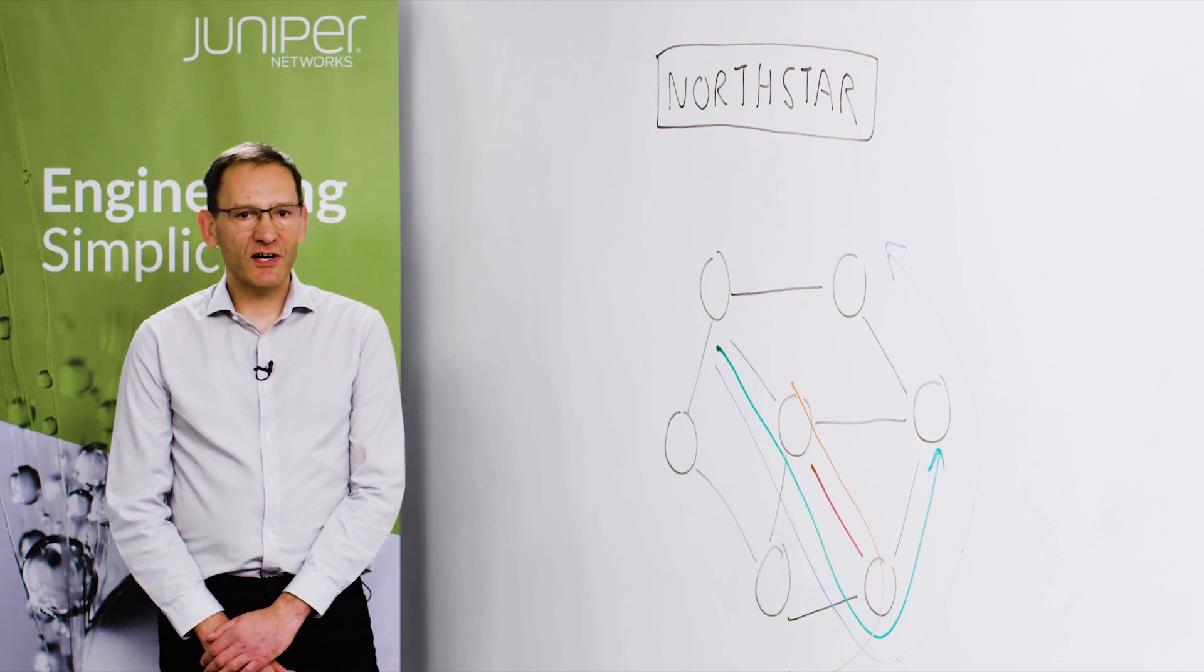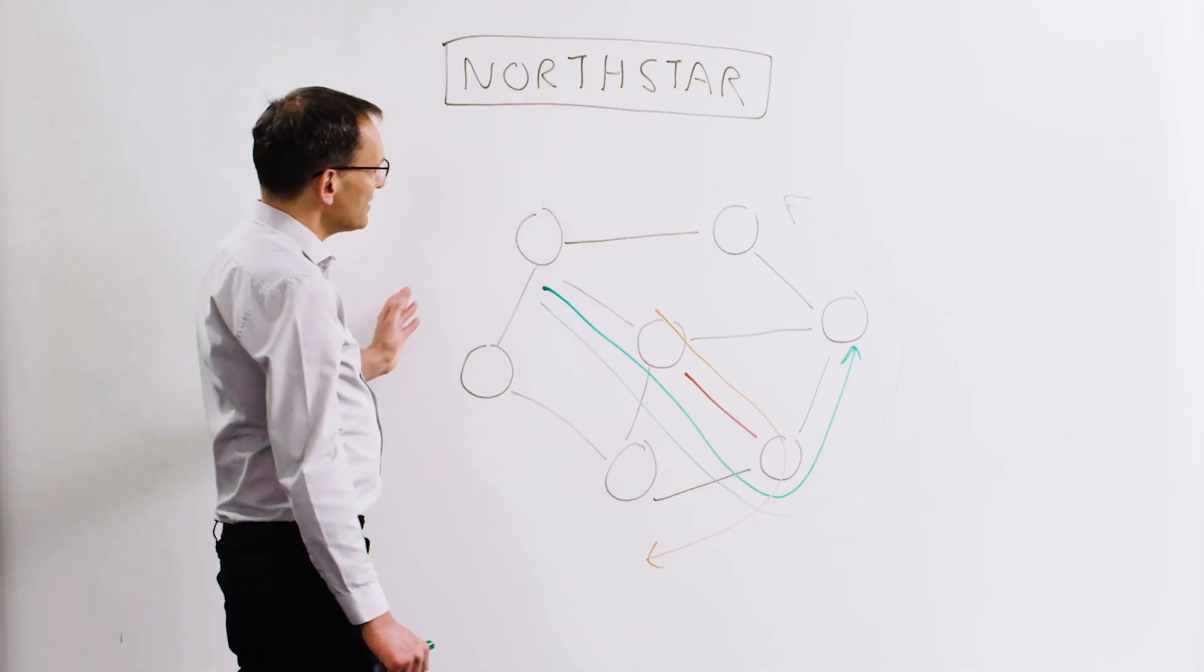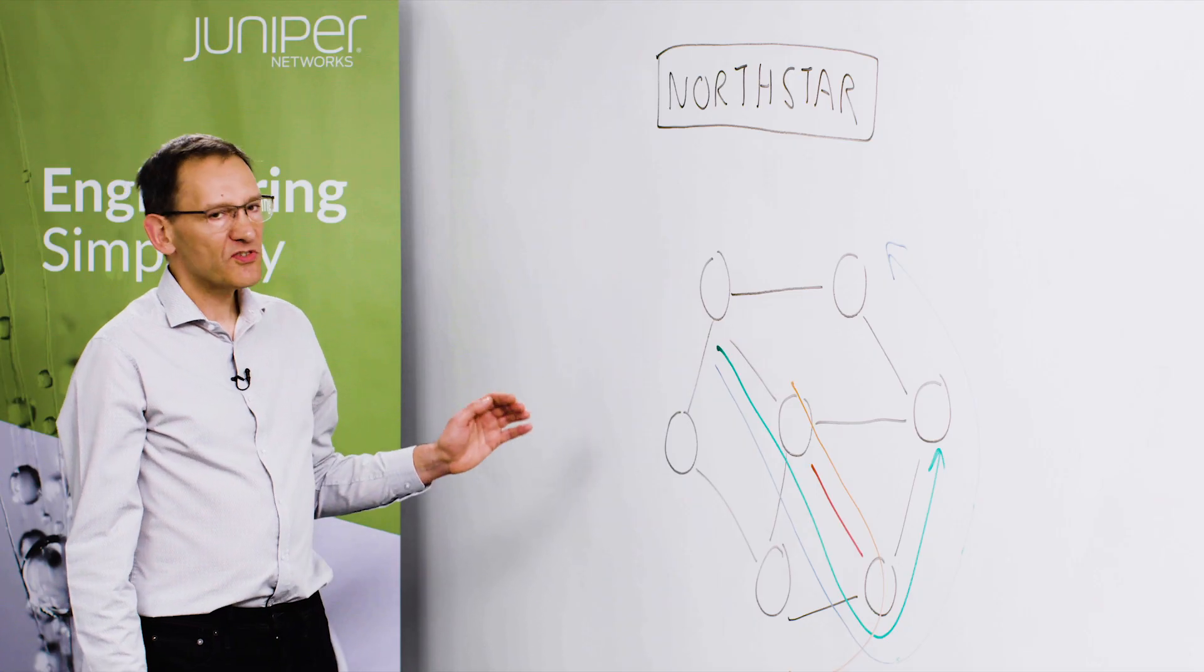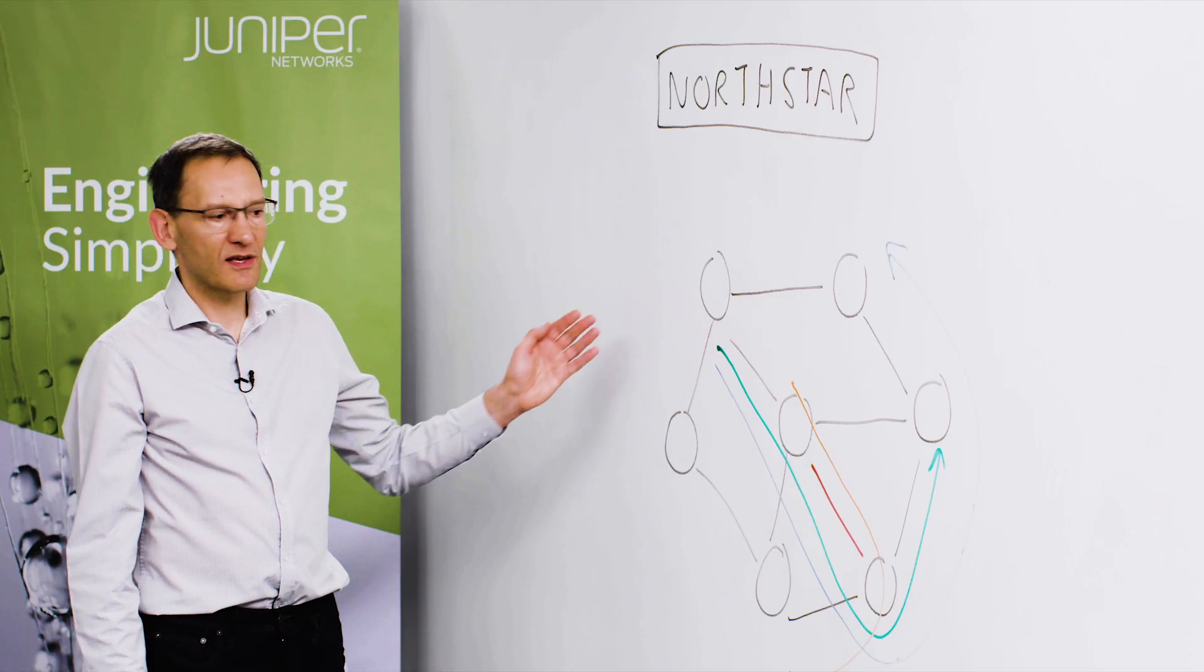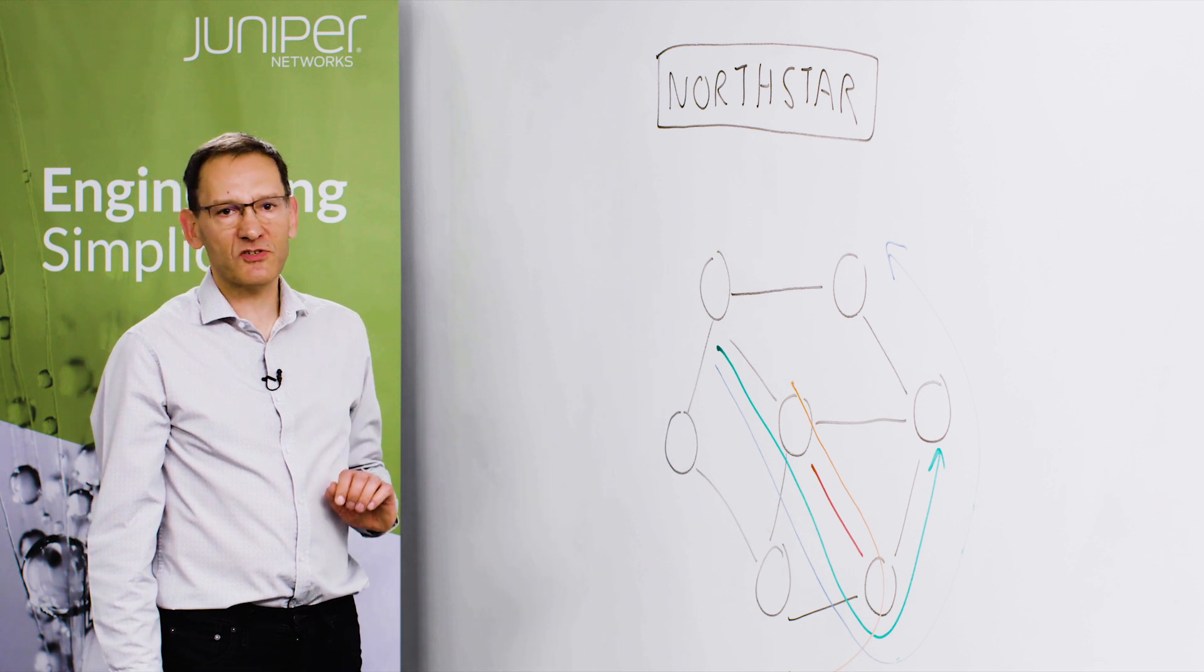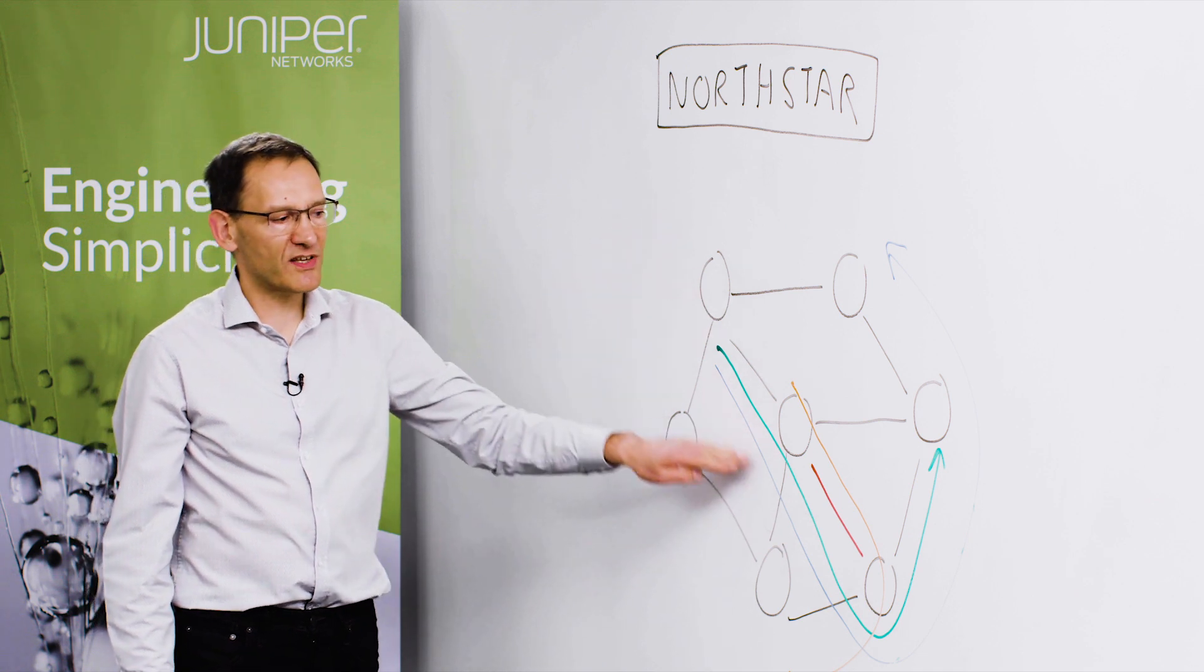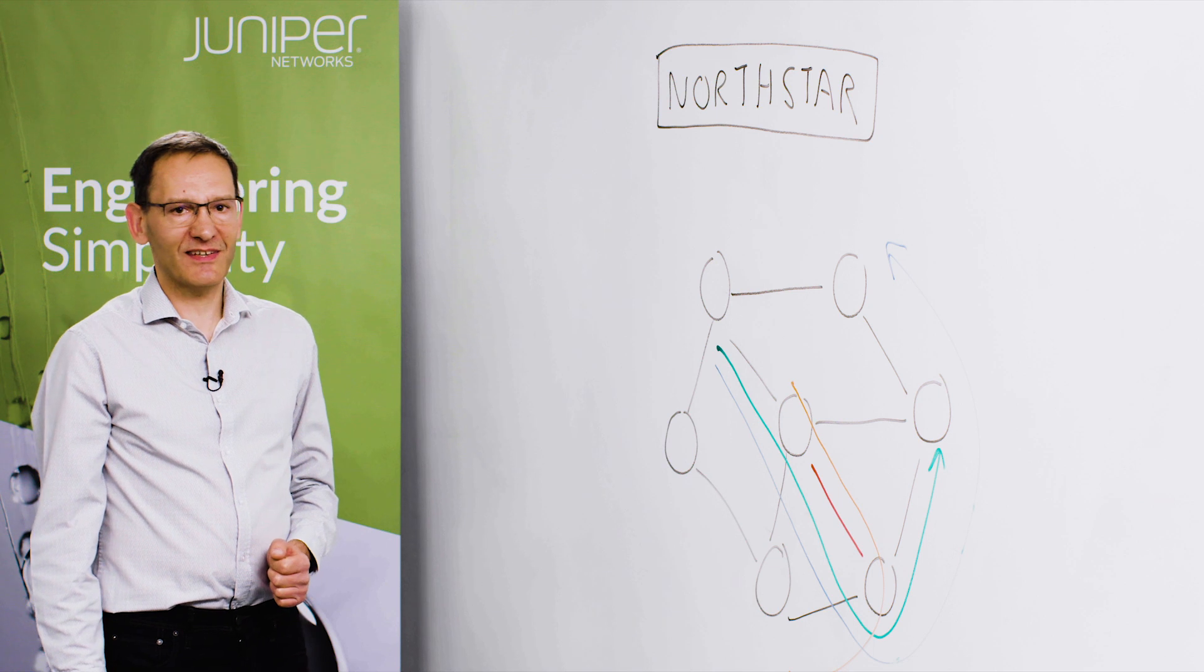So let's have a look at how Northstar deals with this situation. Northstar can see the topology of the network via the BGP-LS protocol. Also, it's receiving a lot of information about traffic levels throughout the network. It can see through streaming telemetry how much traffic is on each physical link and how much traffic is traveling down each traffic engineered LSP, whether that's an RSVP or segment routed LSP.